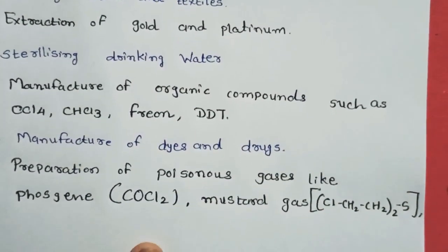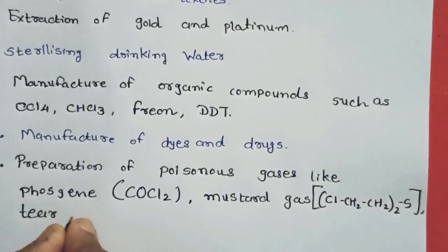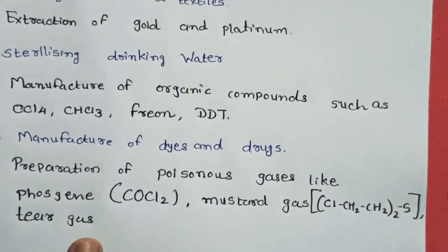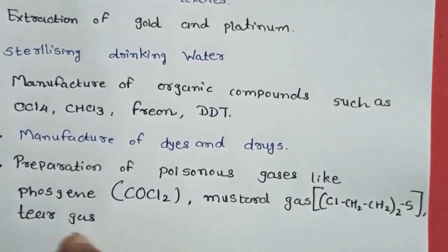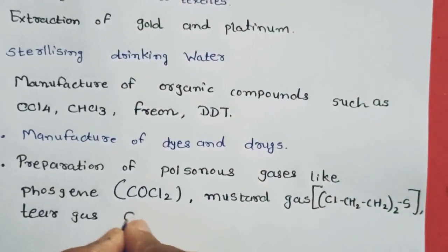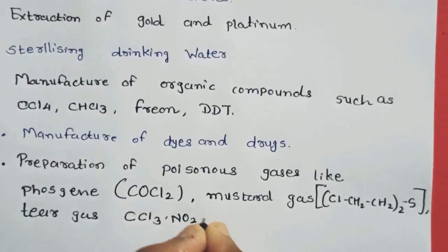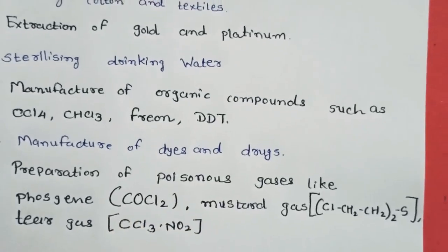Also, it is used in the preparation of tear gas. You may have heard that mostly police use this tear gas to control riots and such situations. Its formula is CCL3·NO2. So chlorine is used in the preparation of such poisonous gases.